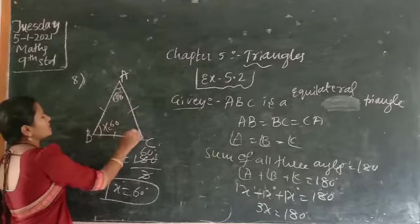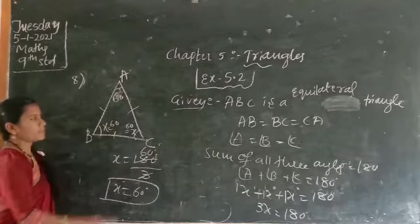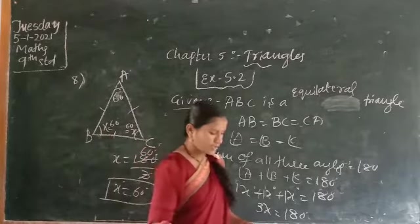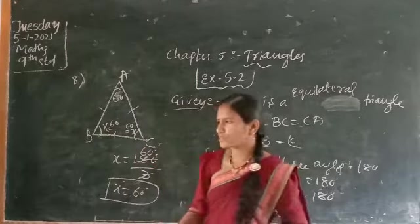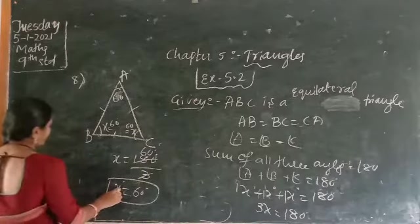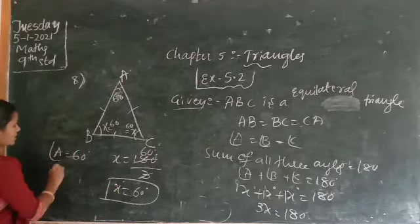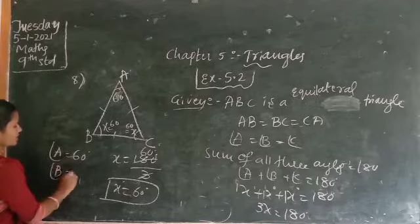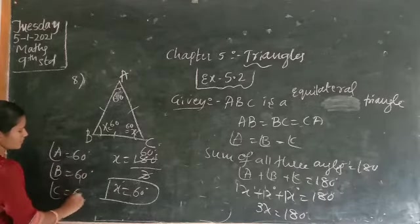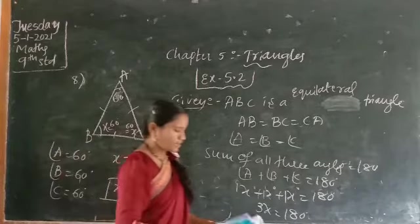Since all angles were taken as X, each angle equals 60 degrees. Angle A is 60 degrees, angle B is also 60 degrees, and angle C is also 60 degrees. Adding them: 60 plus 60 plus 60 equals 180 degrees. That is how you solve this.